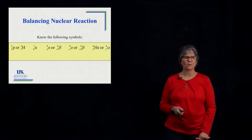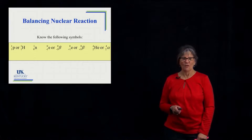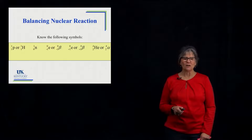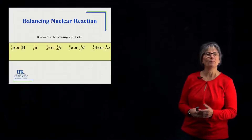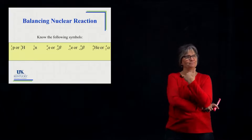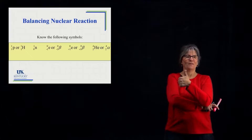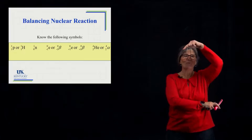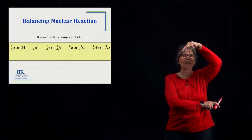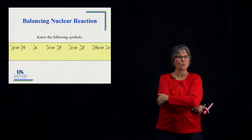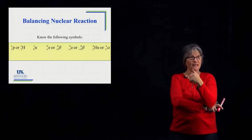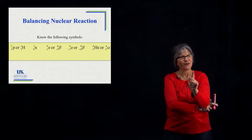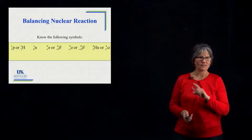We'll walk across them by name one at a time. The first one is a way of representing a proton. The bottom number is one because it tells you how many protons you have — it's a proton, so there's one proton. The top number tells you the number of protons plus neutrons. There are no neutrons, so one plus zero equals one — that's why the top number is a one. You can represent it with a P for proton or with an H, and we can use both symbols.